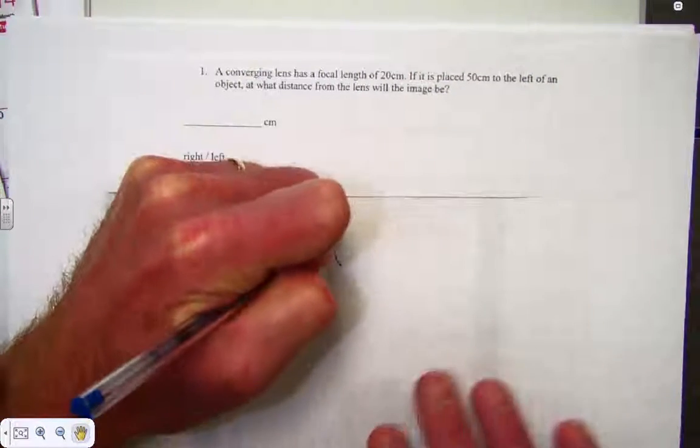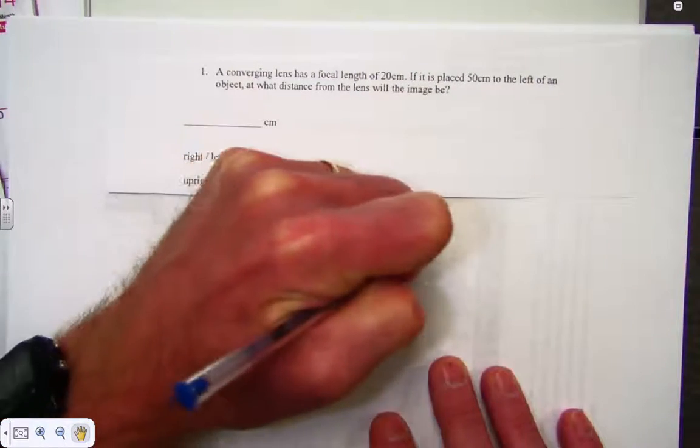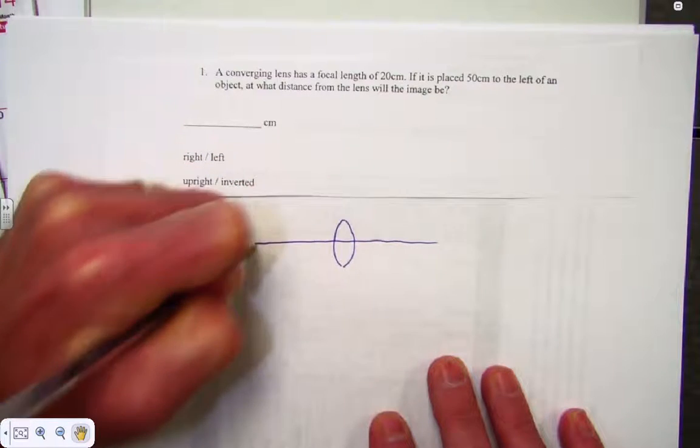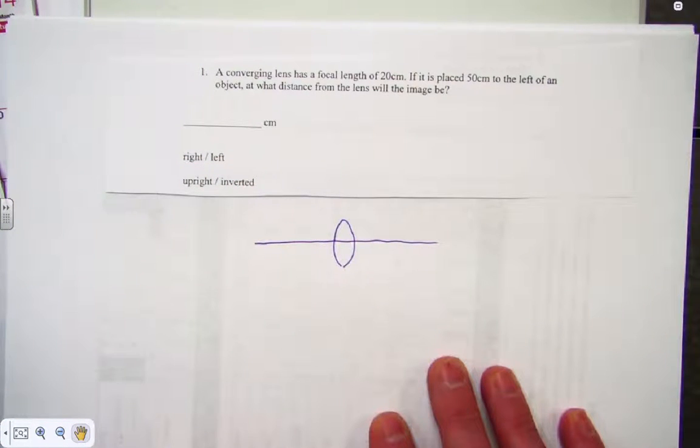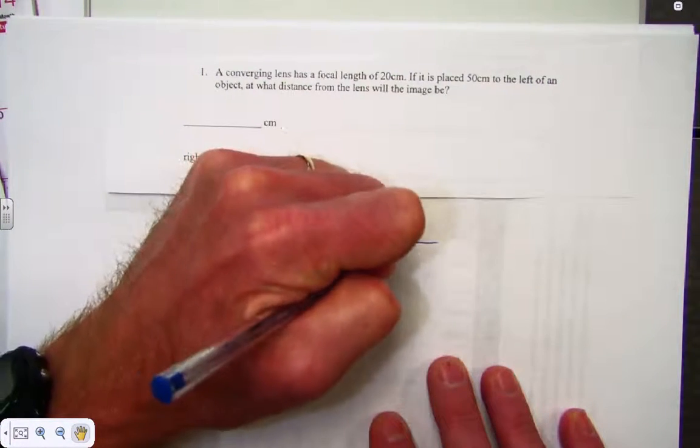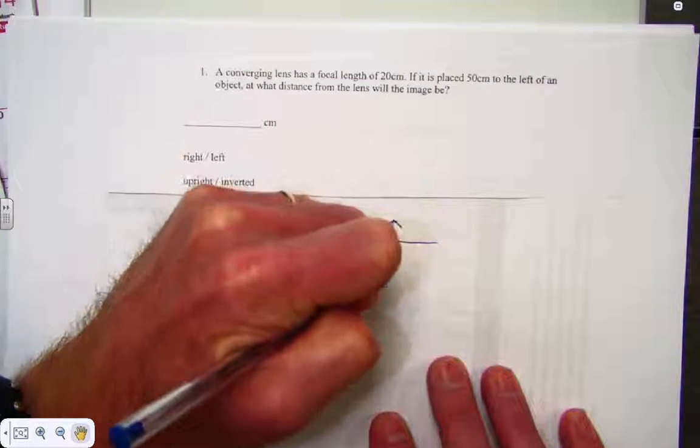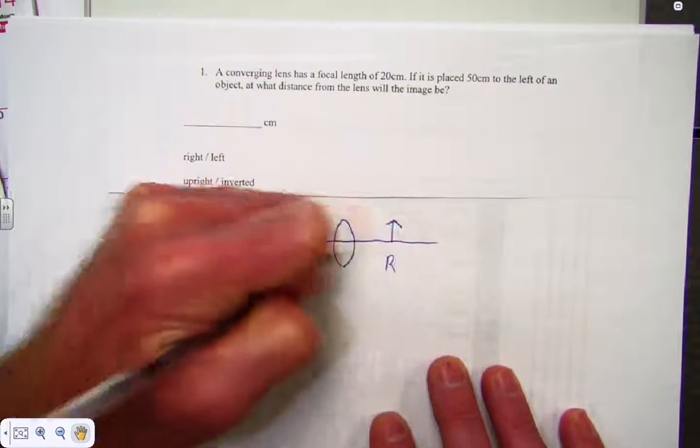So I'll start off by drawing a converging lens, which is a bi-convex lens, with the normal here. It's placed 50 centimeters to the left of the object. So the object will be on the right-hand side, and this helps to label the right and the left.